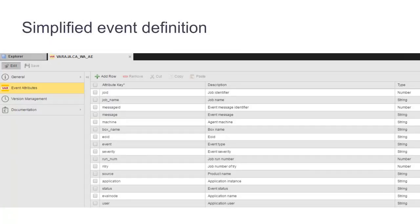A simplified event definition represents the message fields published by CA Workload Automation AE in the new Event Manager. The event definition corresponding to CA Workload Automation AE messages needs to be added to the CA Atomic One Automation Platform to understand the CA Workload Automation AE message format. Please refer to the CA Workload Automation AE documentation for important steps.